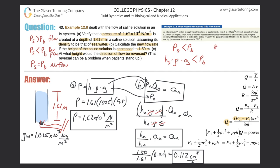I need to convert 8 millimeters of mercury into Pascals. Remember that there's 1.013 times 10 to the fifth Pascals for every 760 millimeters of mercury — because they're both equivalent to one atmosphere. So the conversion is: 8 times 1.013 times 10 to the fifth, divided by 760. We get a value of about 1066 Pascals. This is the pressure of the blood.